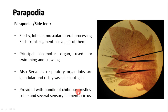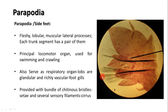Parapodia are provided with a bundle of chitinous bristles called setae and several sensory filaments called cirri. You can see numerous bristles — these are formed of chitin, so they are chitinous bristles called setae. There are also certain structures called cirri, which are sensory structures.